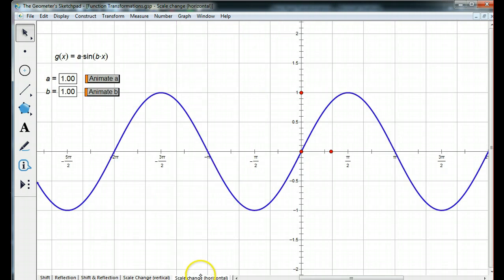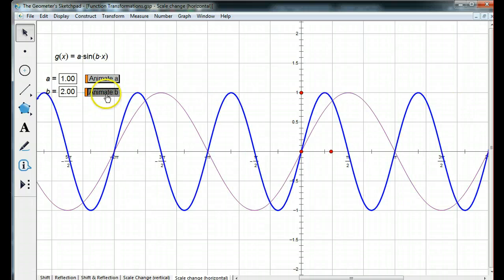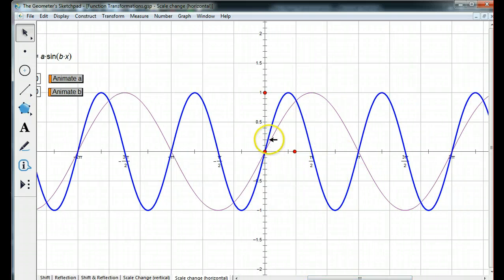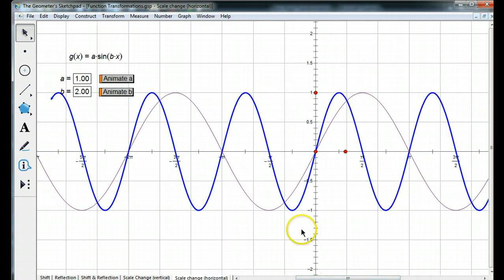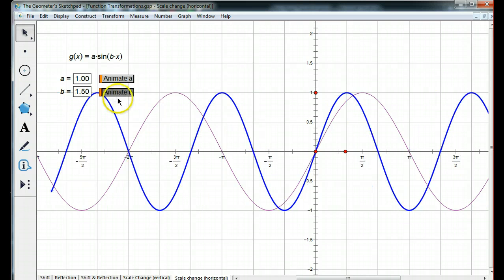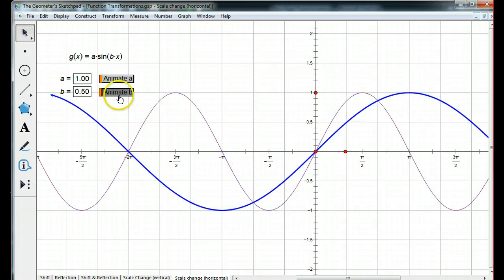Now, what happens if we multiply x by a value? So, I'm going to leave a at 1, and I'm going to multiply x by different numbers. I'm going to stop it right there. So, this is g of x equals the sine of 2x. Normally, one period of sine goes from 0 to 2 pi, but now, if I multiply x by 2, it finishes the period in 1 pi space. So, multiplying x by 2 has the effect of squeezing the graph into half the space.